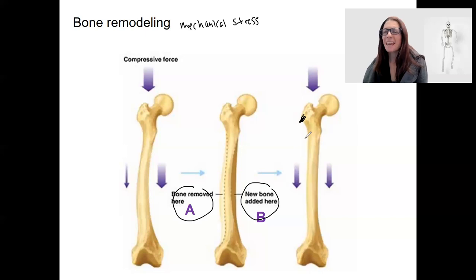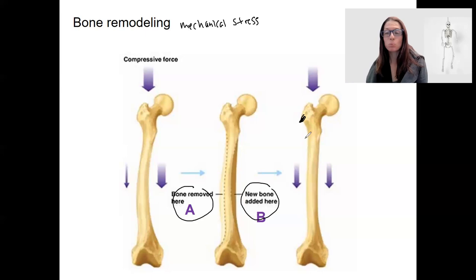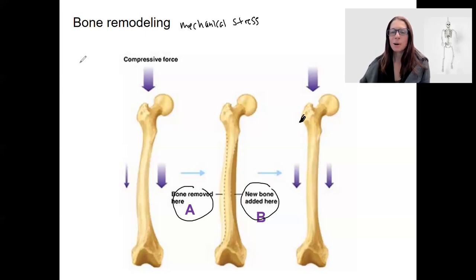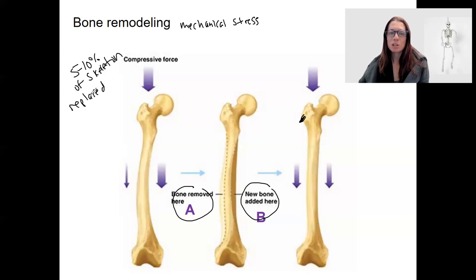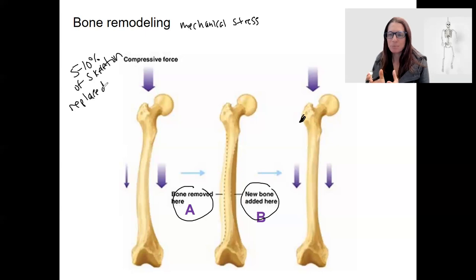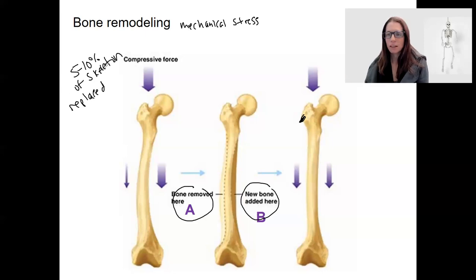Remodeling can happen based on activity levels. In addition to that, your entire skeleton is actually replaced over time — about 5% to 10% of your skeleton is replaced in a year. That provides an opportunity for bone to remodel as it's being replaced as well, and this occurs somewhat regardless of changes in forces.